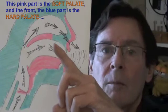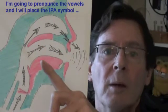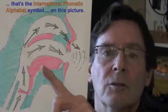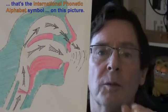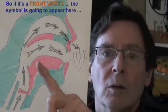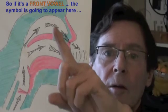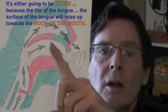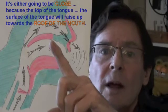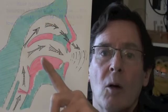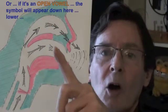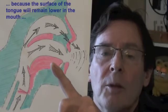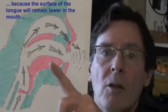I'm going to pronounce the vowels and place the IPA symbol — that's the International Phonetic Alphabet symbol — on this picture. If it's a front vowel, the symbol is going to appear here. It's either going to be close, because the surface of the tongue will raise up towards the roof of the mouth, or if it's an open vowel, the symbol will appear down here, lower, because the surface of the tongue will remain lower in the mouth.